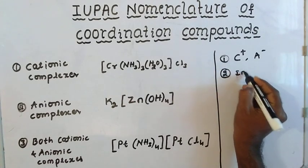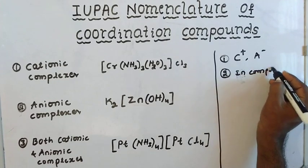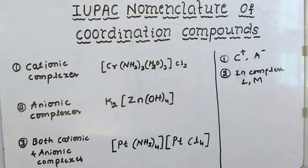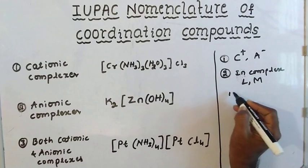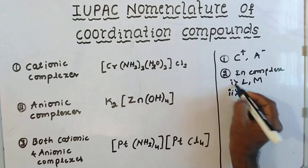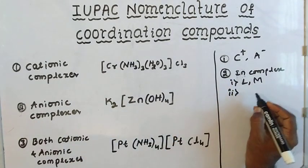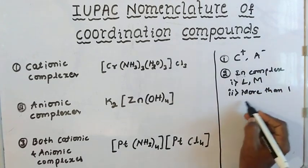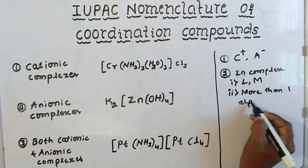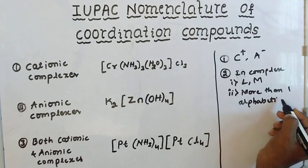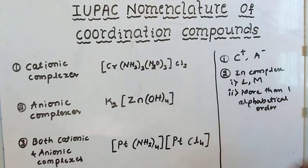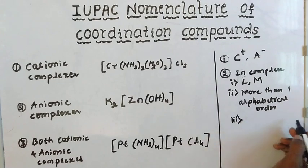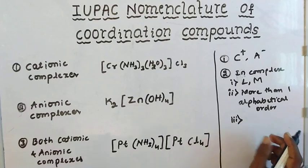In a complex, the next rule is about ligands. Ligands should be named in alphabetical order.